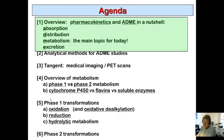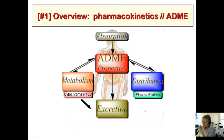Phase one is kind of like introducing a functional group into a drug molecule via oxidation, reduction, or hydrolysis. Phase two is attaching another molecule to the phase one product, which enhances excretion by your body. So drugs are absorbed into your body, metabolized mostly by cytochrome P450, distributed via plasma proteins in your blood, and then at some point they're excreted — usually through your kidney, and sometimes your colon.